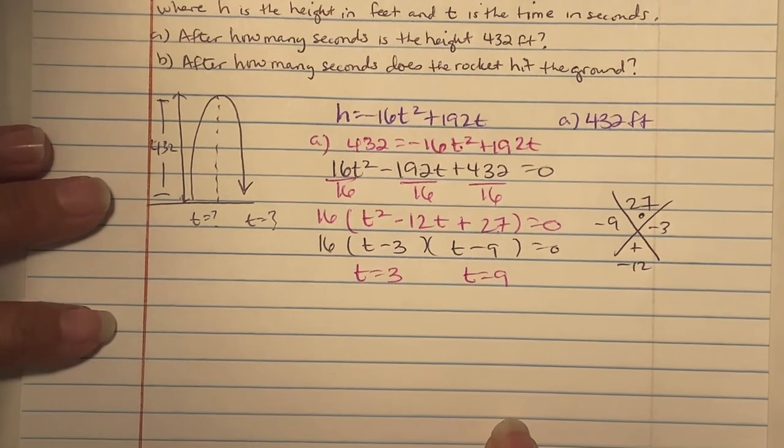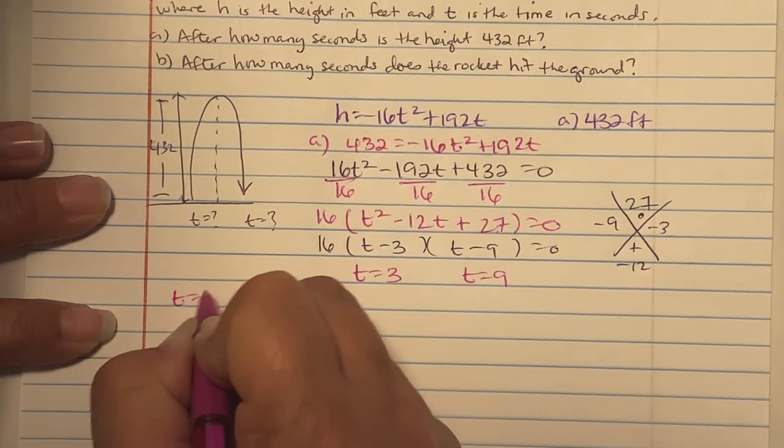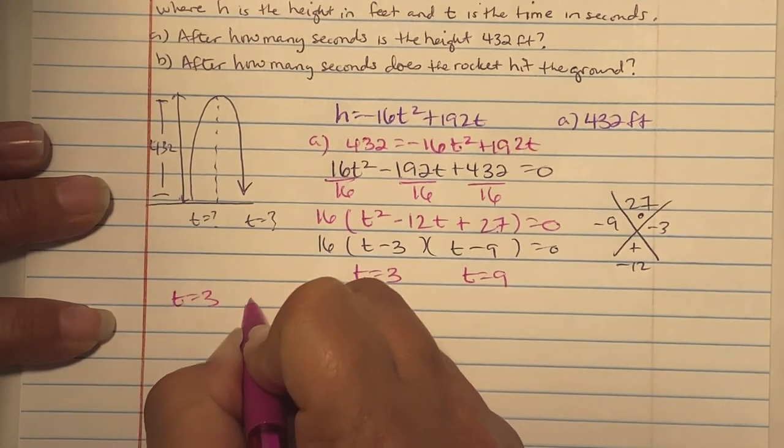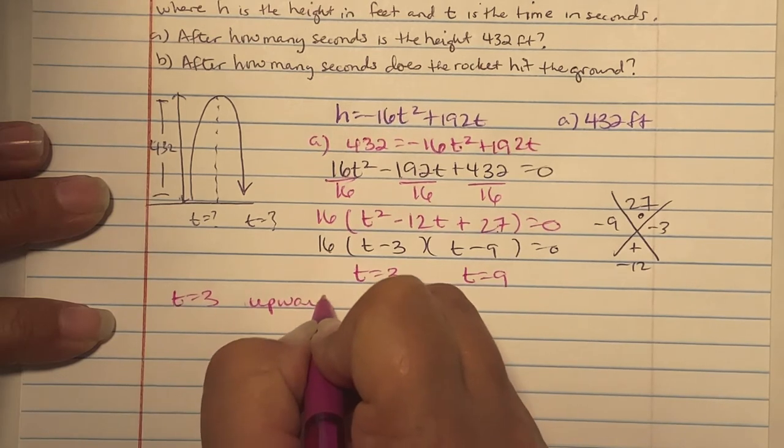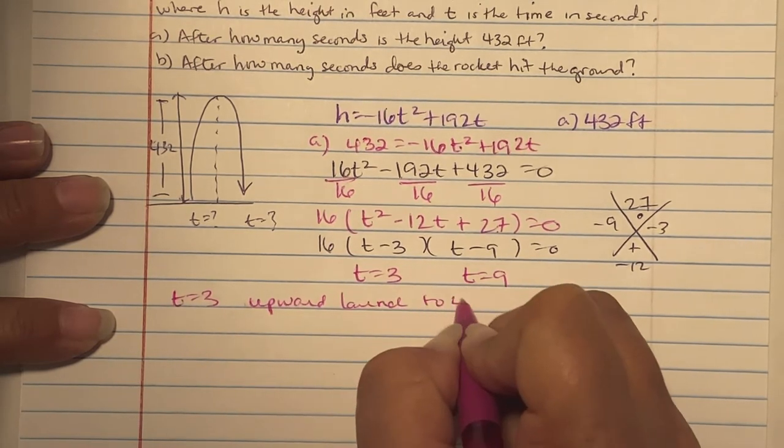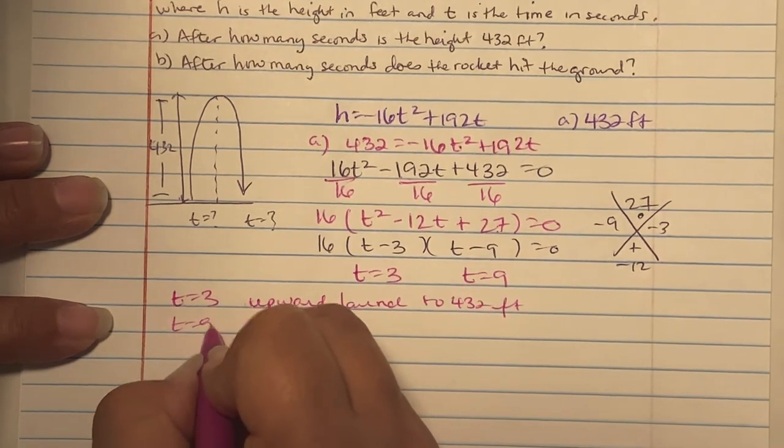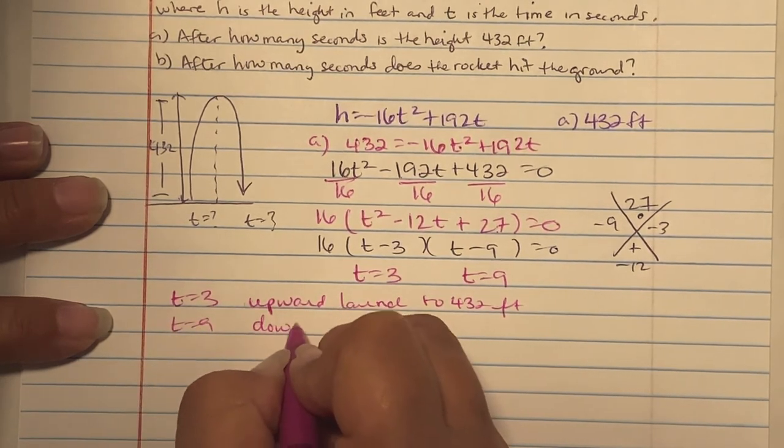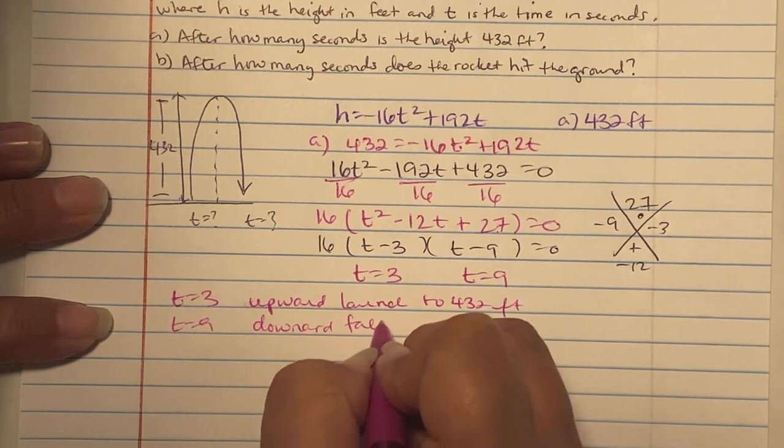t equals 3 is the upward launch to 432 feet. t equals 9 is the downward fall to 432 feet.